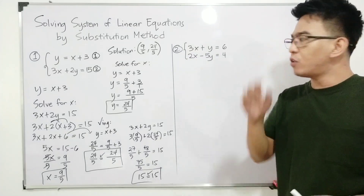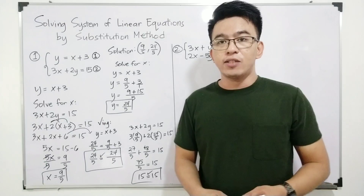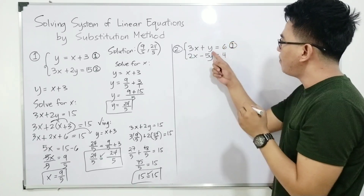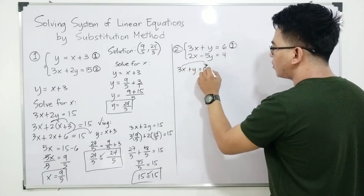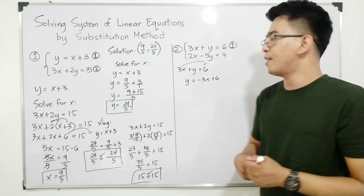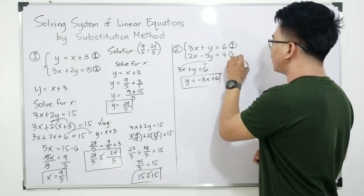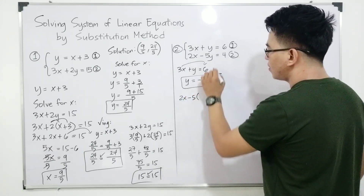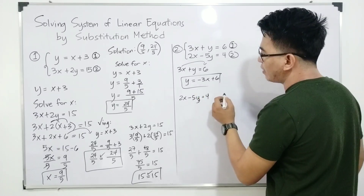Let's move on to item number 2. Here we'll need an extra step because the value of y is not yet isolated. I'll use equation number 1 since it has a variable with a coefficient of 1. We have 3x + y = 6. Transposing 3x to the other side: y = −3x + 6. This is our preliminary expression for y.